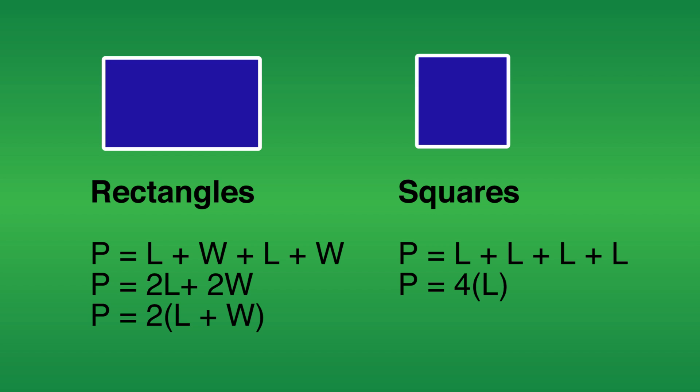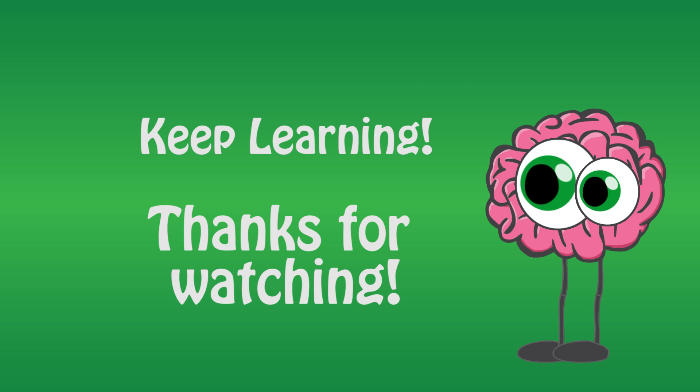So no matter which of these methods you use to find the perimeter of a rectangle and square, they all come down to the same idea: the perimeter is the sum of all of the edges.